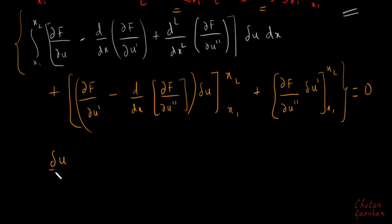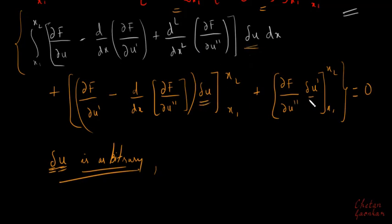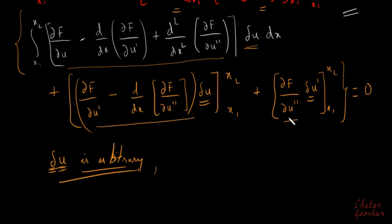Now, what is δu? This change in u is some arbitrary value — it is arbitrary. Therefore, to satisfy the condition that this sum equals zero, each term must individually equal zero, since δu cannot itself be forced to zero.